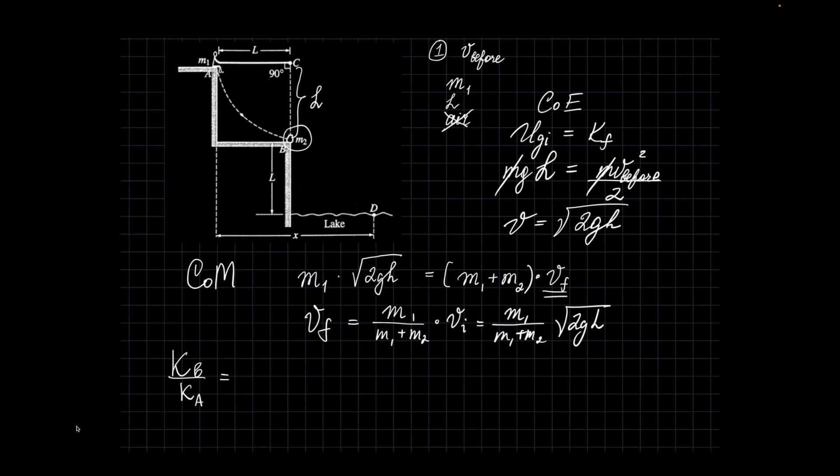So kinetic energy before is M1. Then when I square the root of 2gl, it's just 2gl. So 2gl and then divided by 2, right? But then when I divide the other one, I'm just going to cancel the 2s, okay?